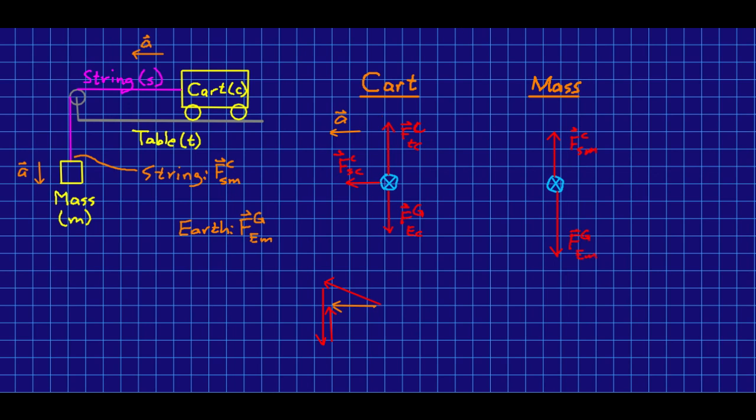And I've deliberately made the gravitational force bigger than the force that the string is exerting because we know that the acceleration of the mass should be down, and so the vector sum of forces should be down.